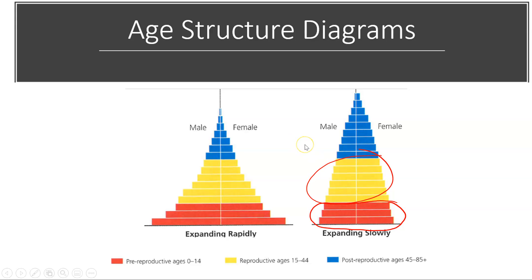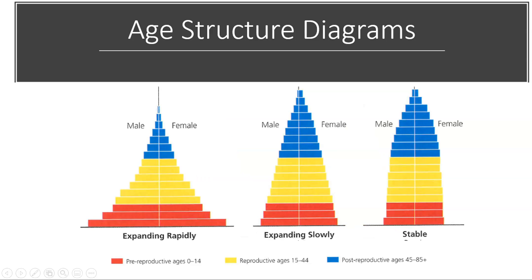An age structure diagram of a stable population would look something very similar to this, in which there is little, if any, difference in the proportion of people in the reproductive age compared to the pre-reproductive age. That means we're going to have essentially the same number of people in that reproductive age in the near future, which tells us that fertility rates are right about replacement level.